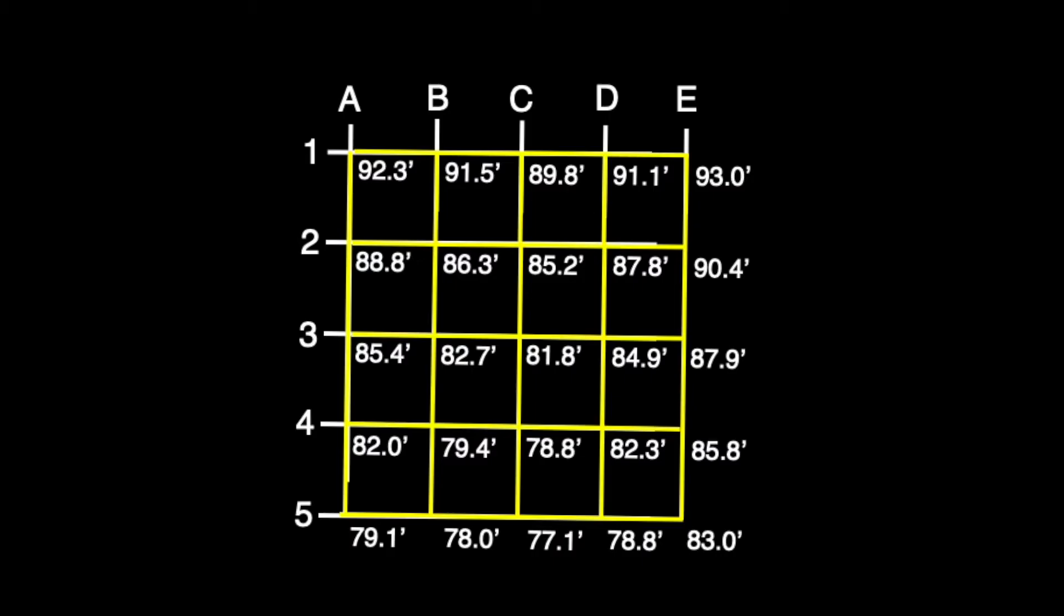Looking at the grid points and their respective elevations, the process of interpolation begins with the understanding that contour lines must rest on whole numbers according to a contour interval.